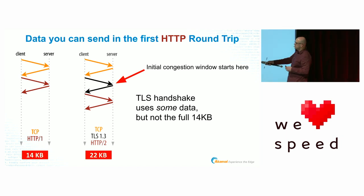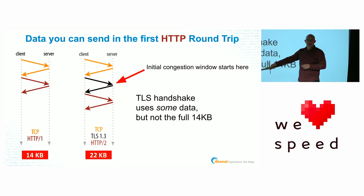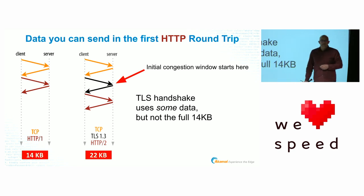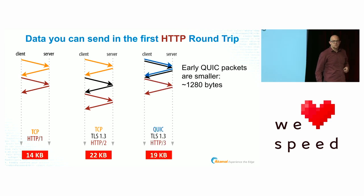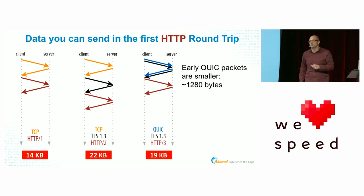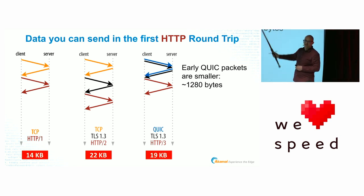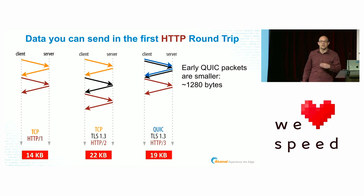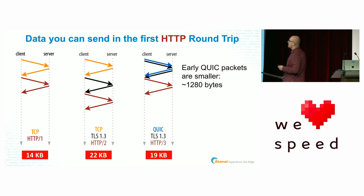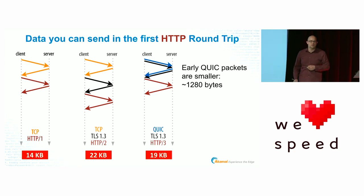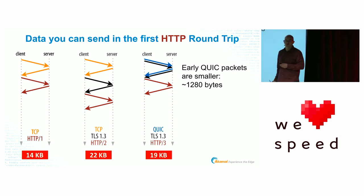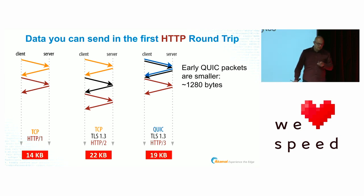By the time you get to your H2 request, you will have more data available already. It gets more interesting with HTTP/3, which uses a new transport protocol called QUIC. QUIC combines the transport and cryptographic handshake, and also uses slightly smaller packets — about 1.2 kilobytes in the beginning. H3 also has Zero RTT: you can send an H3 request and get a response back in the very first round trip during the handshake. However, due to security reasons, the amount of data you actually get to send back can be as low as 4 kilobytes.